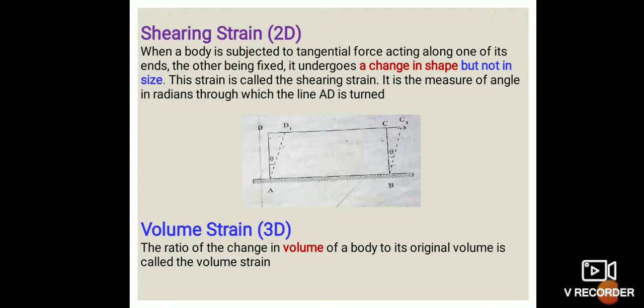The volume strain is the three-dimensional case. We have one-dimensional (linear), two-dimensional (shearing), and three-dimensional (volume). The ratio of the change in volume of a body to its original volume is called volume strain: change in volume divided by original volume. To summarize: linear strain is change in length by original length; shearing strain is change in angle by original angle; volume strain is change in volume by original volume.